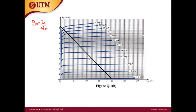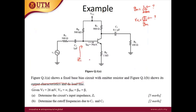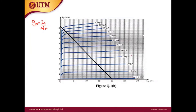The given information includes IBQ equal to 30 microamperes. From the graph, we find the curve where IB equals 30 µA and identify the intersecting point with the load line. The intersection gives VCEQ and ICQ. The ICQ reads as 4.2 milliamperes.